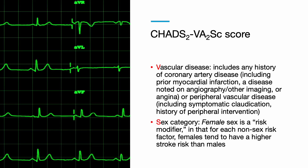V is for vascular disease. This includes any history of coronary artery disease, such as prior myocardial infarction, disease noted on angiography or other imaging, or patients with angina, or peripheral vascular disease including symptomatic claudication and history of peripheral intervention. S is for sex — female sex is a risk modifier in that for each non-sex risk factor, females tend to have a higher stroke risk than males.